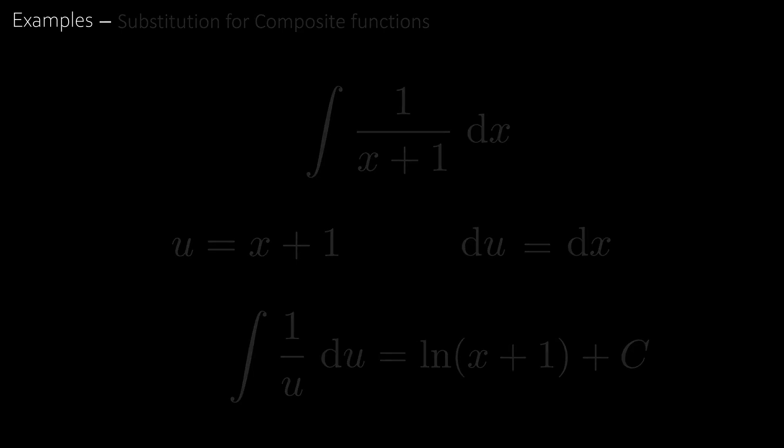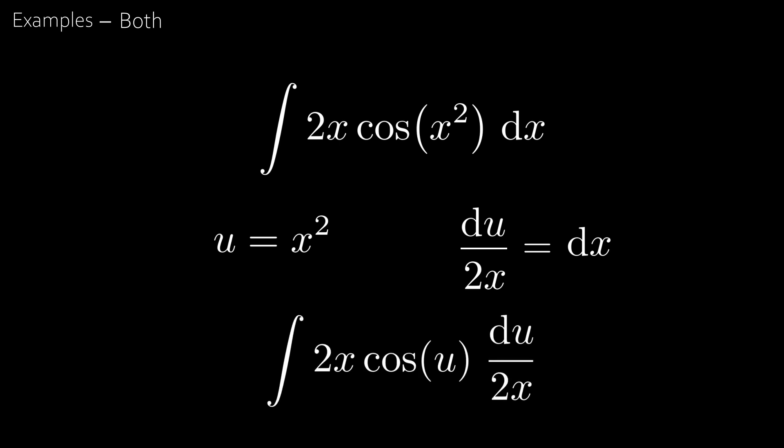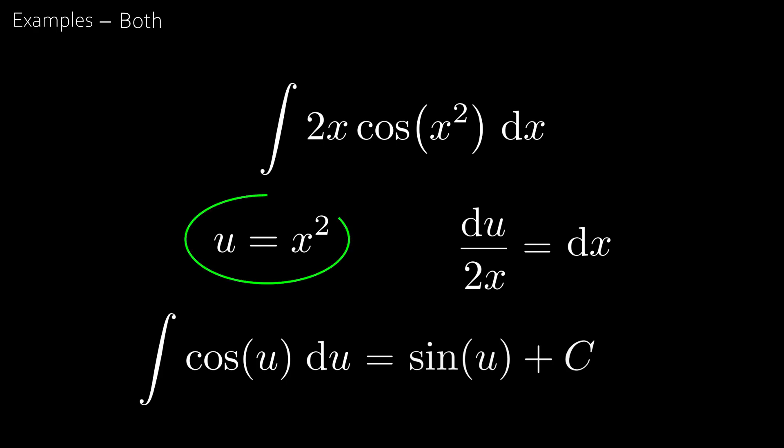Now for the final most common type: both. Say you wanted to find the integral of 2x cosine x squared. We begin by subbing in u equal to x squared, which is the inner function. This gives du by dx equal to 2x, so dx is equal to du over 2x. Combining everything gives the integral of 2x cosine u, du over 2x. We see that the 2x cancels out, giving the integral of cosine u du, which is just sine u plus c. Since u equals x squared, this is sine of x squared plus c.